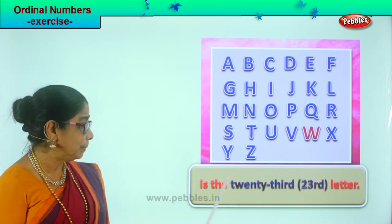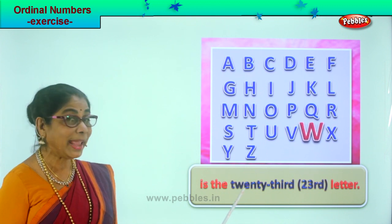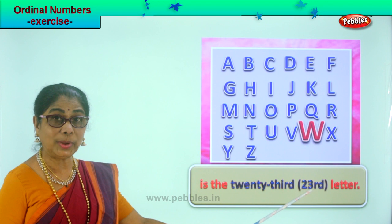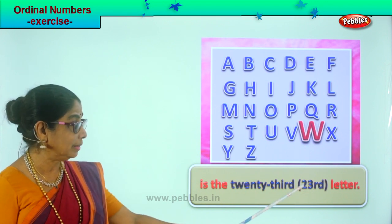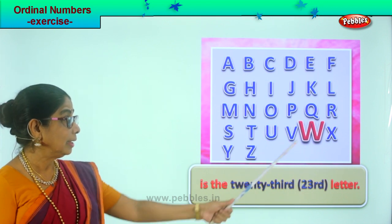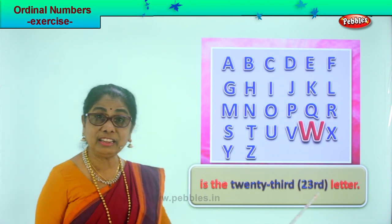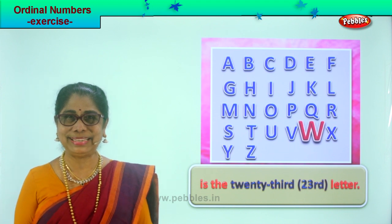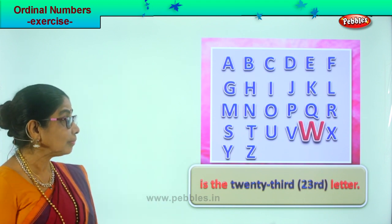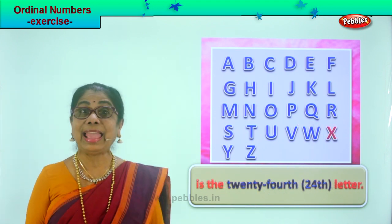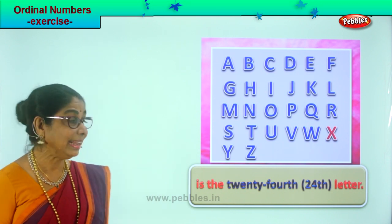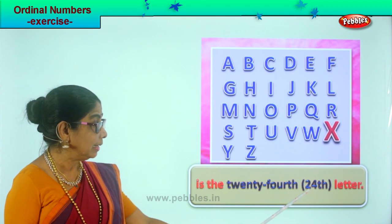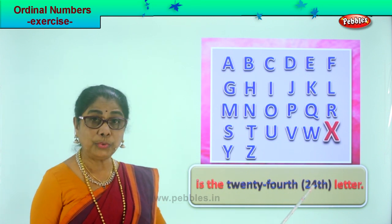After V, W — W is the twenty-third letter. See how you write twenty-third? You write twenty-three and RD. W is the twenty-third letter. Next, X — X is the twenty-fourth letter. You write twenty-four and TH.